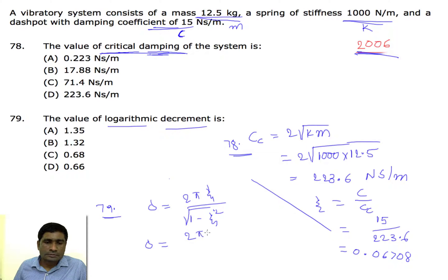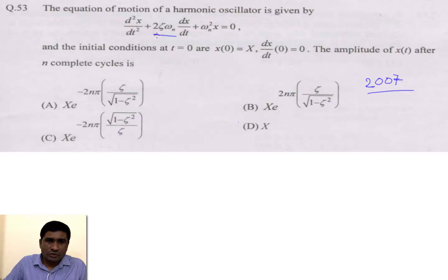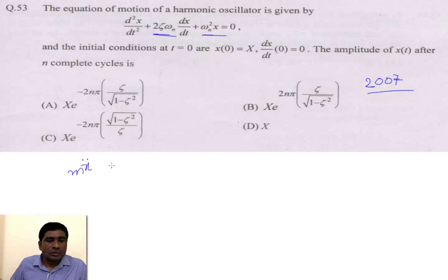Substituting into the logarithmic decrement formula: δ = 2π × 0.067 / √(1 − 0.067²), which gives approximately 0.42. The standard form of the equation of motion is m·ẍ + c·ẋ + kx = 0.